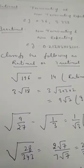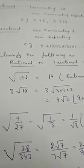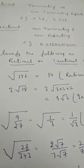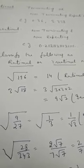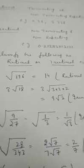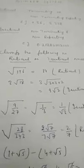3 root 18, if I factorize 18, it will be 3 into 3 into 2 and 3 root 18 will become 9 root 2. It is irrational.